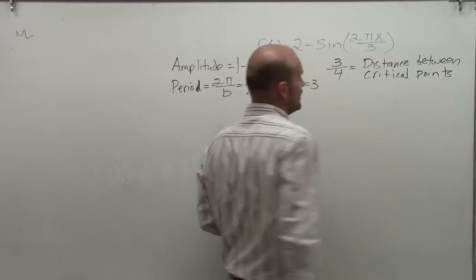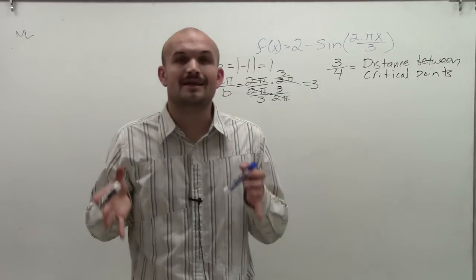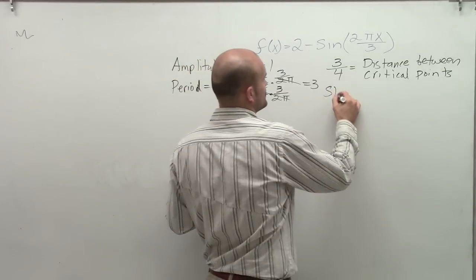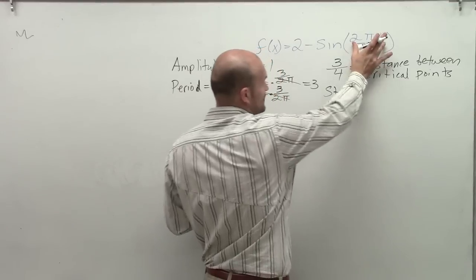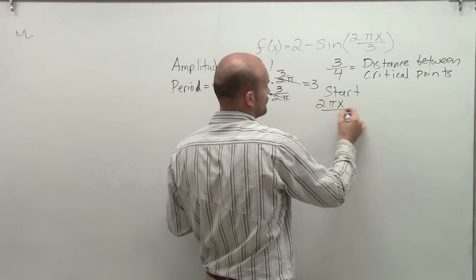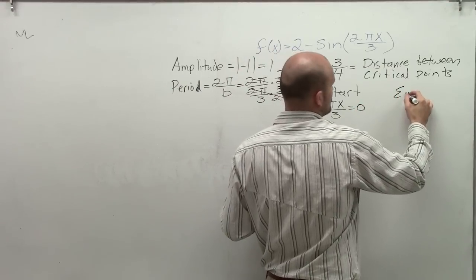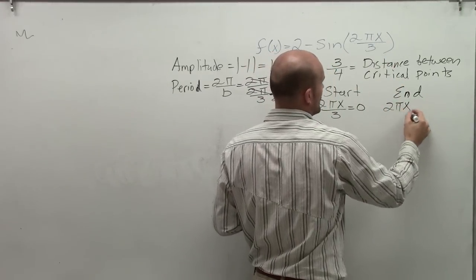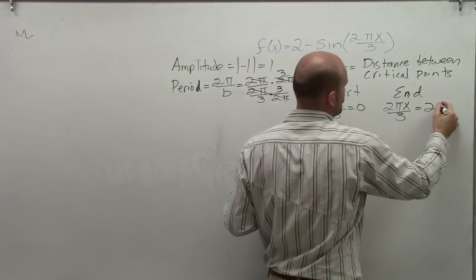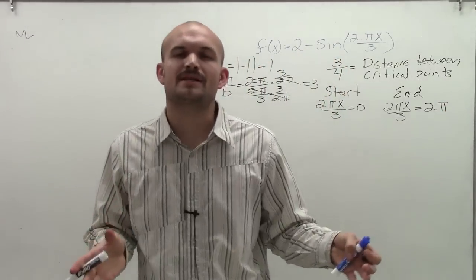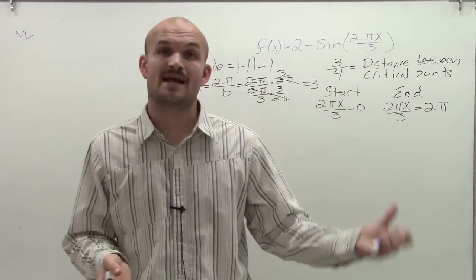So the next thing we need to do is determine what's going to be the start and the end point of my initial period that I'm going to graph. So to find the start, all we're going to do is take whatever's inside our function and set that equal to 0. Then to find the end, what we're going to do is set whatever's inside my function and set that equal to 2 pi. Because remember on the parent graph, our initial period that we look at starts at 0 and ends at 2 pi.